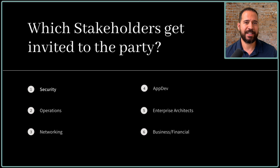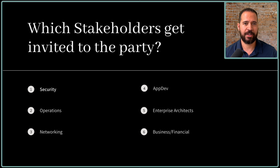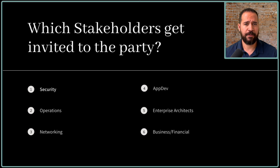A well-architected review needs to involve a good representation from several cross-functional teams. The first I would suggest is security — you want someone at the table with good insights on the security of that application and architecture. You need someone familiar with operations, knowing what it takes to operate that application and service. Networking — what are the ins and outs of the networking of that application? You definitely need app dev team representation. If you have enterprise architects within your organization, they should have a seat at the table. And ideally, somebody from business and finance, as they'll be very keen on cost.